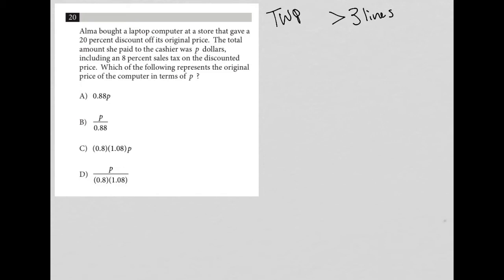So the first sentence says that Alma bought a laptop computer at a store that gave a 20% discount off its original price. So how do we translate that? Well, the original price is a value that we don't know, so I'm going to call it X. So X equals orig for original price.